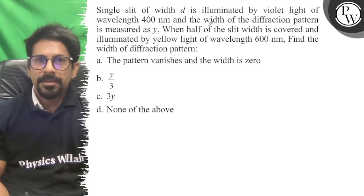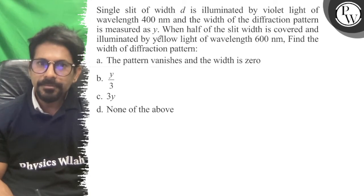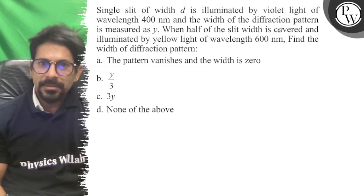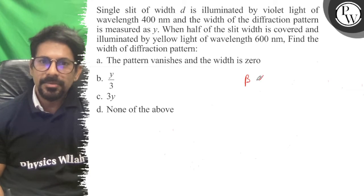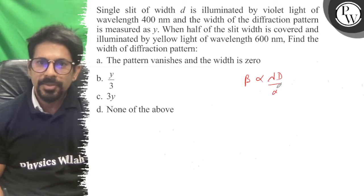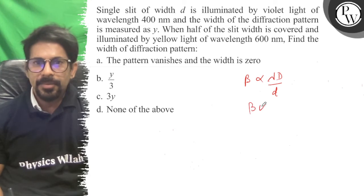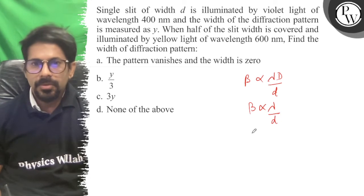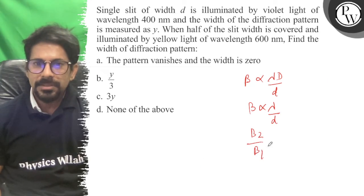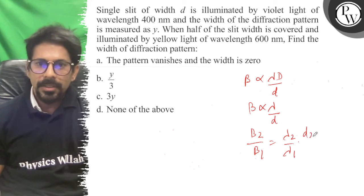The width of the diffraction pattern is measured as y. When half of the slit is covered and illuminated by yellow light of wavelength 600 nm. Beta is directly proportional to lambda over d, so beta₂ upon beta₁ equals lambda₂ upon lambda₁ into d₁ upon d₂.